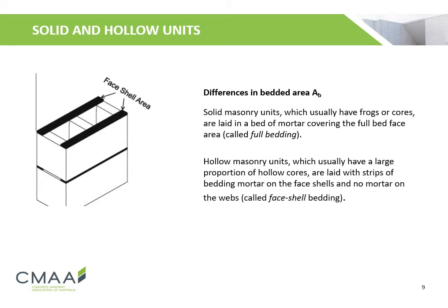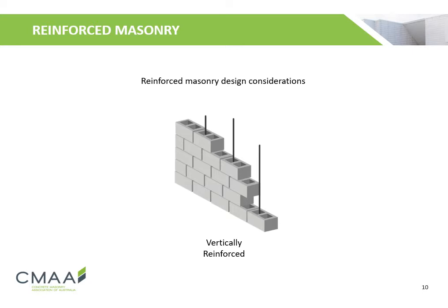For solid and hollow units, the bedded area AB differs. Solid masonry units, which usually have frogs or cores, are laid in a bed of mortar covering the full bed face area — this is called full bedding. Hollow masonry units, which usually have a large proportion of hollow cores, are laid with strips of bedding mortar on the face shells and no mortar on the webs — this is called face shell bedding.